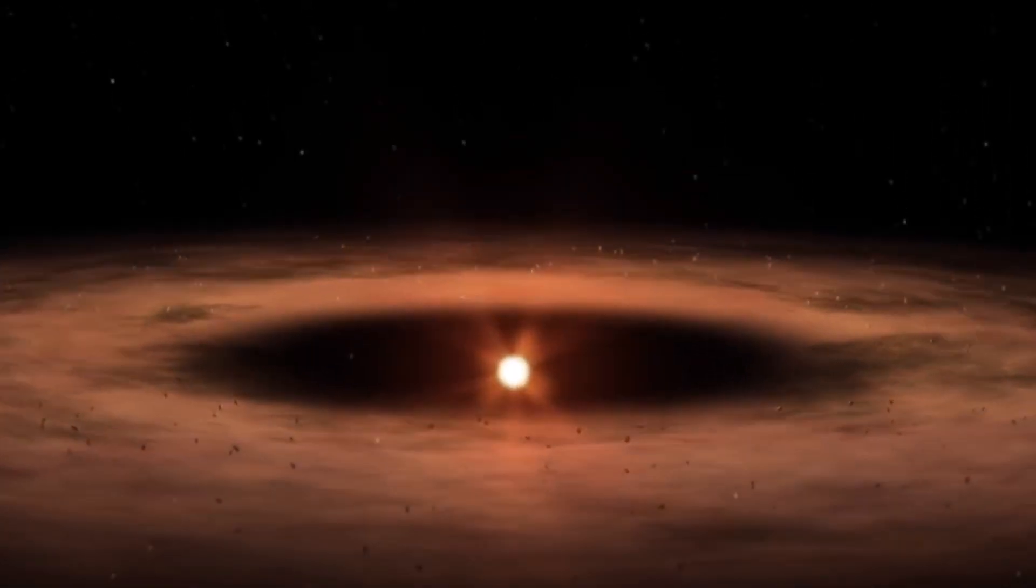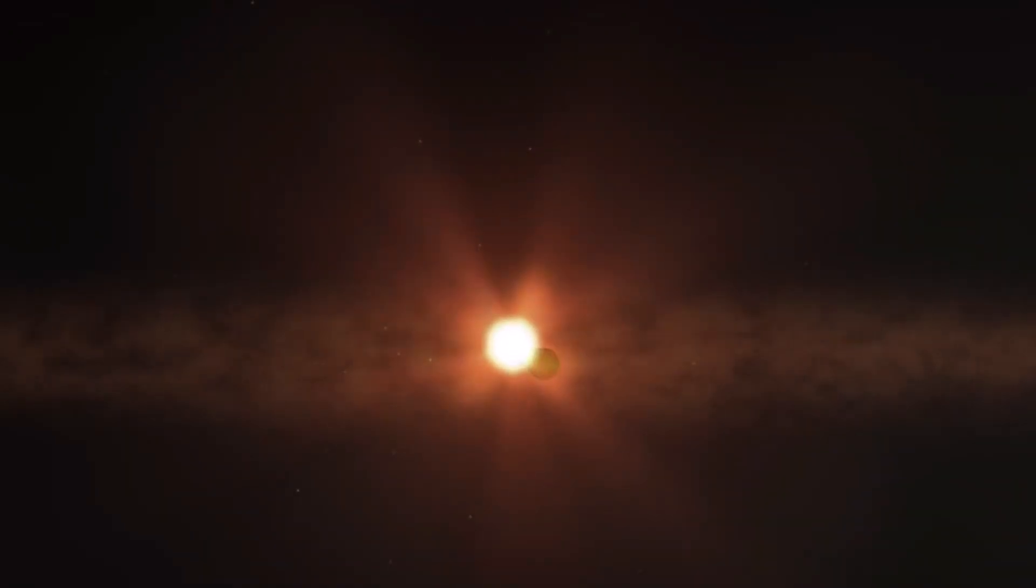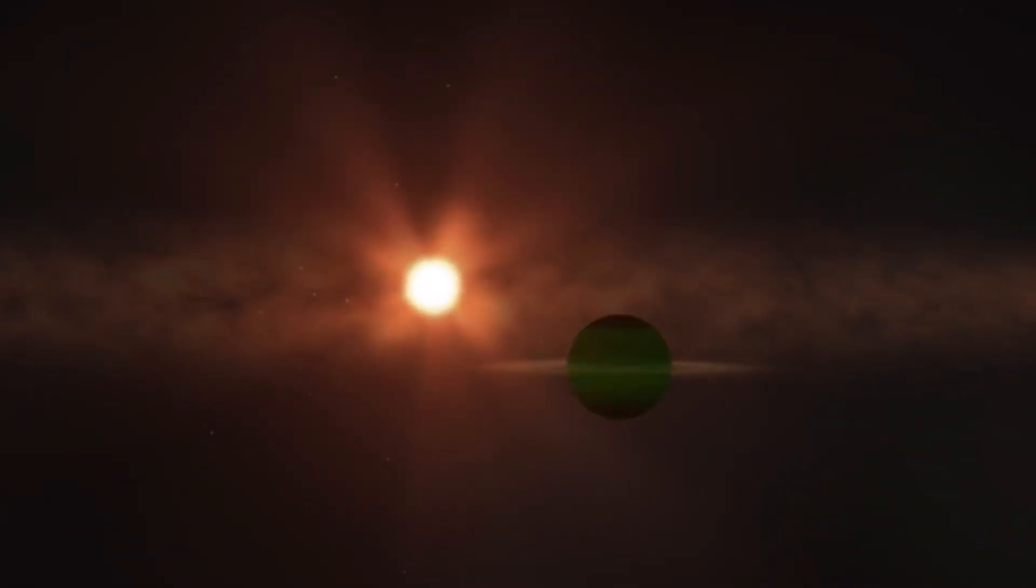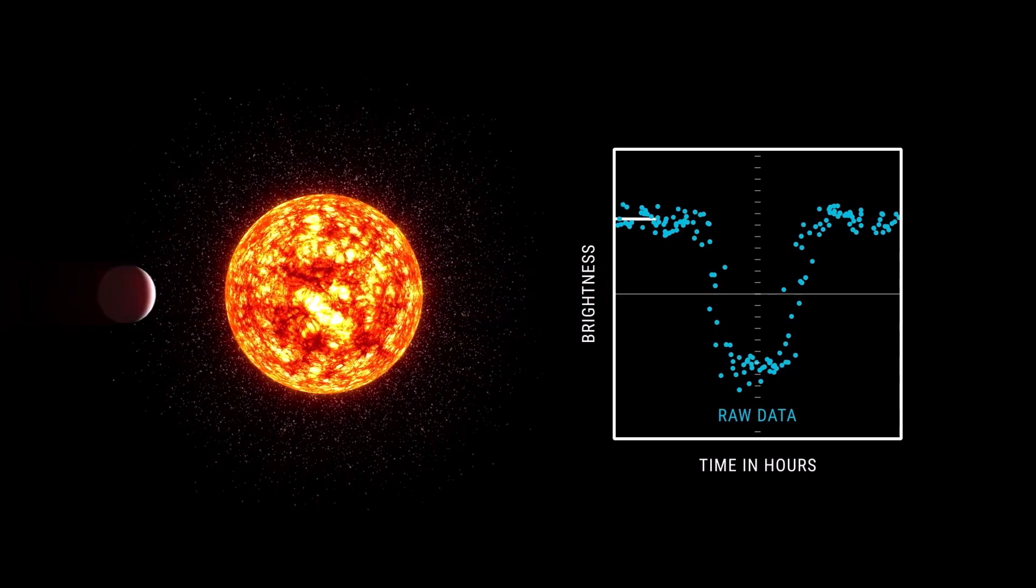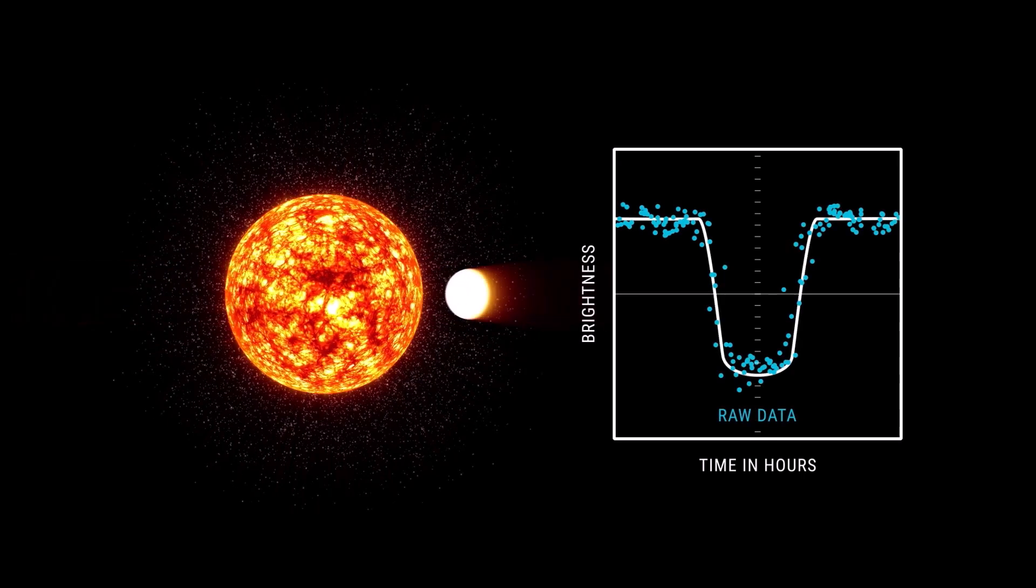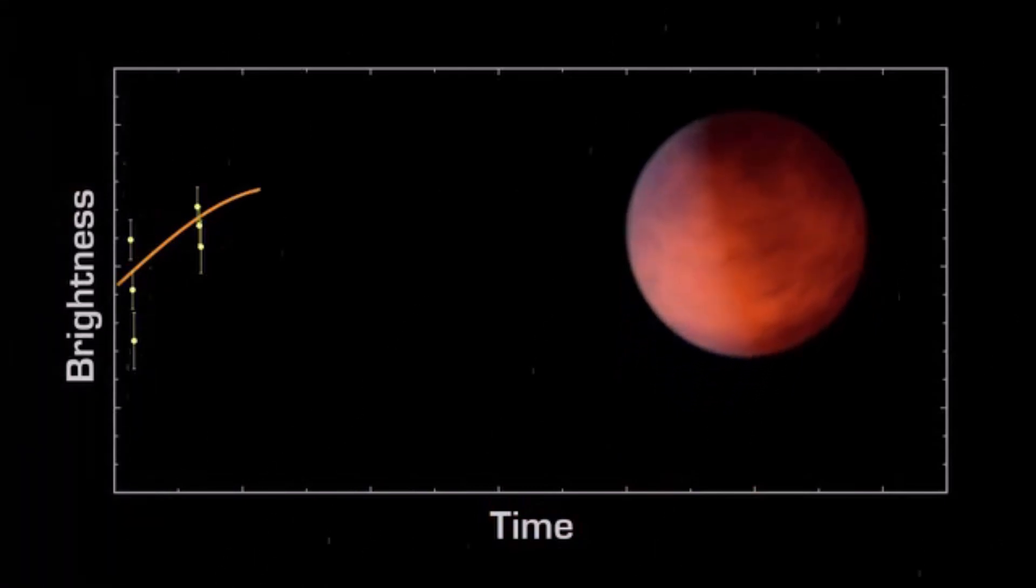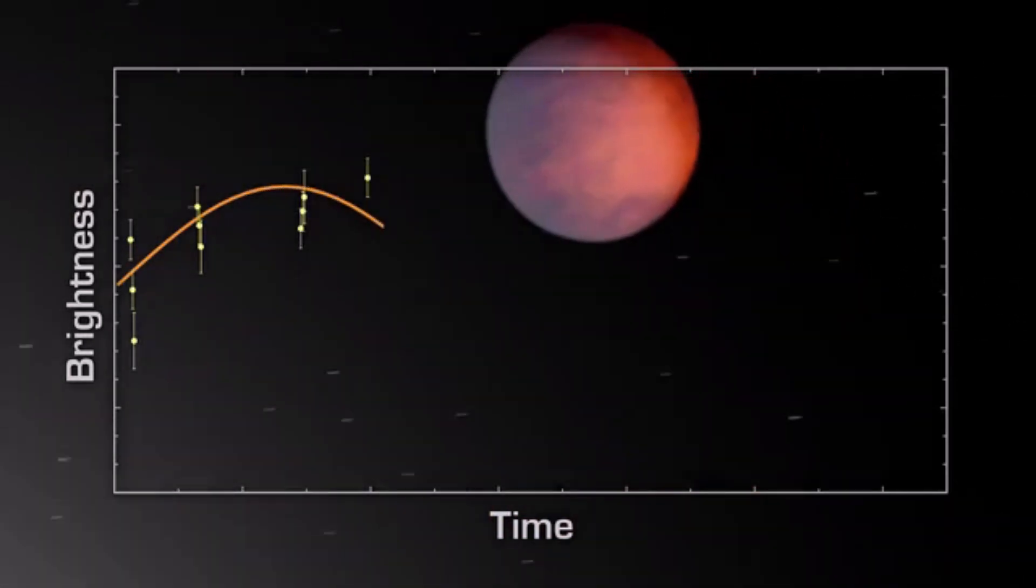Proxima b could be nothing more than a scorched airless rock, its orbit whipping around its dim red star every 11.2 days. Or it could be something far stranger, a living world. Perhaps even home to minds that have wondered about us in return.